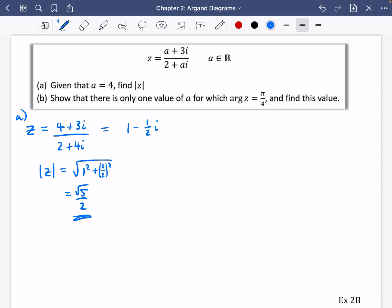Part B is where things get a little bit more interesting. So it says show that there is only one value of a for which the argument of z equals π over 4. And find this value. So I think at this point here, it's going to be pretty difficult to do anything with it whilst we have a complex number that isn't in the standard form of x plus iy.